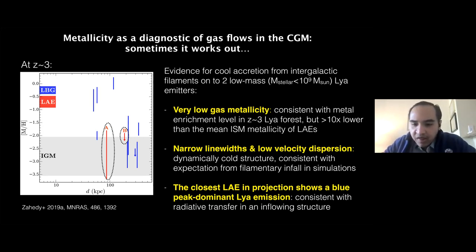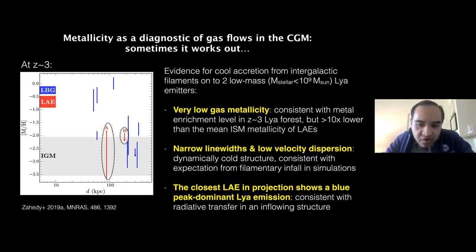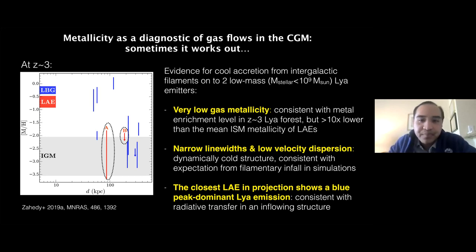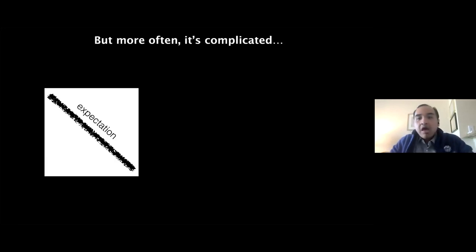So basically, metallicity can be a useful diagnostic, but for that to be the case, you usually have to rely on multiple strands of evidence — not just the chemical abundances, but also the kinematics, the geometry, and the dynamics and so on. But more often, things are a lot more complicated.